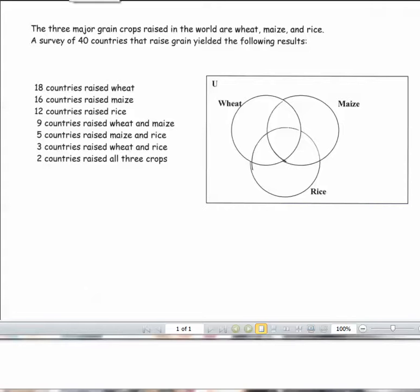The three major grain crops raised in the world are wheat, maize, and rice. A survey of 40 countries that raised grain yielded the following results: 18 countries raised wheat, 16 countries raised maize, 12 countries raised rice, 9 countries raised wheat and maize, 5 countries raised maize and rice, 3 countries raised wheat and rice, and 2 countries raised all three crops.